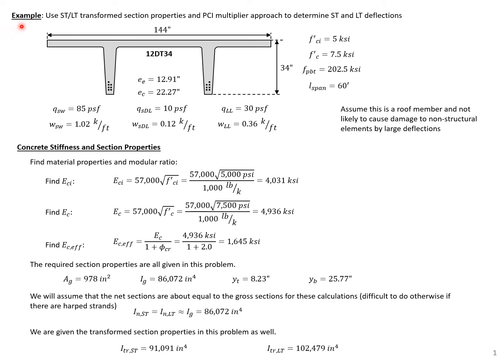In this example problem, we're going to use our net short-term and long-term transformed section properties and the PCI multiplier approach to calculate our short-term and long-term deflections. We have a standard double T section with given loading information and pre-stressing data, including strand locations, concrete strength at release and ultimate, stress in strands before transfer, and a span length of 60 feet. We'll assume this is a roof member not likely to cause damage to non-structural elements, which will help determine what limits to check in ACI 318-19.